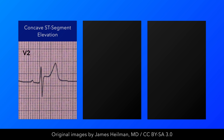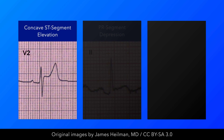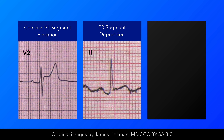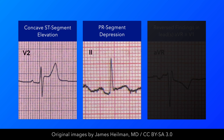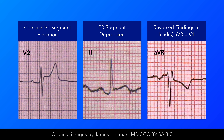Classic findings we can expect to see in a case of acute pericarditis include widespread ST segment elevation with an upward concavity, widespread PR depression, and the inverse or absence of these findings in leads AVR and V1.